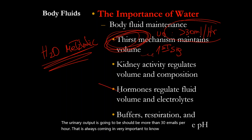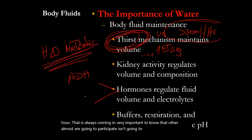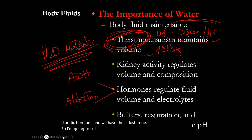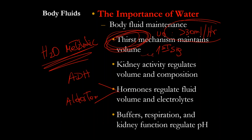Other hormones are going to participate: the ADH, the antidiuretic hormone, and aldosterone. We also have buffers — for example, bicarbonate, which is very important, and hemoglobin and other proteins. Kidney function regulates the pH through secretion, which regulates the excretion of more or less hydrogen and bicarbonate, depending on your acid-base state.